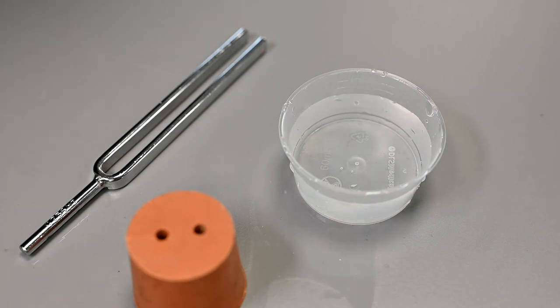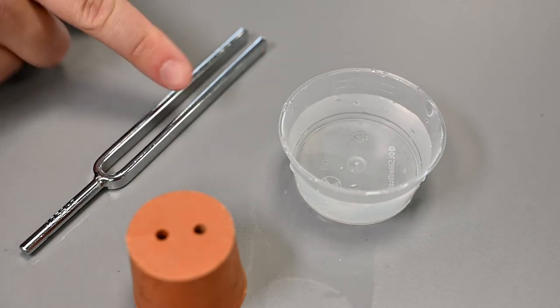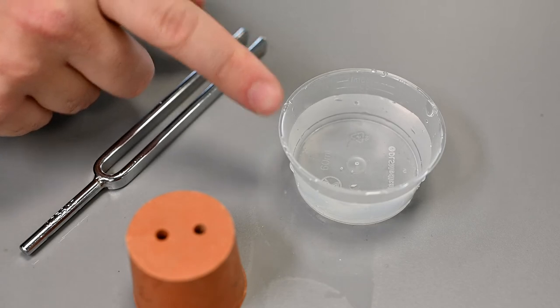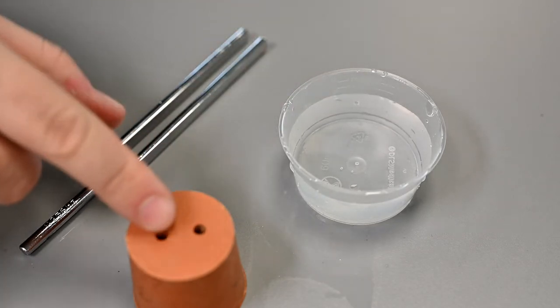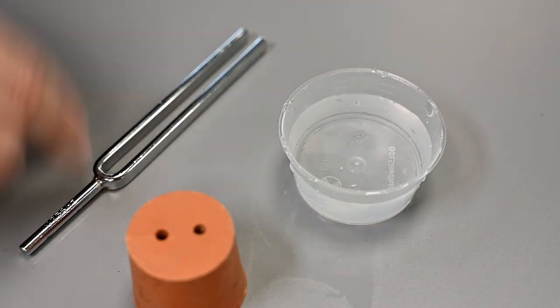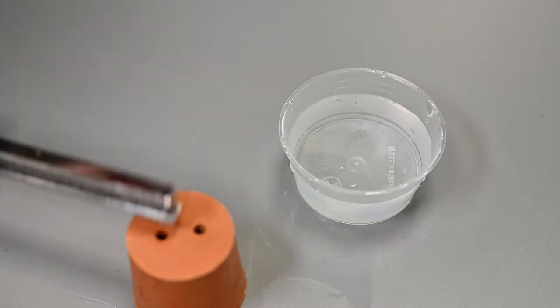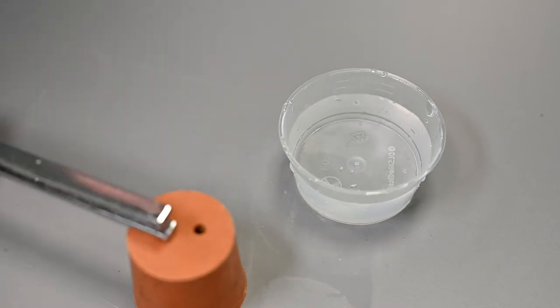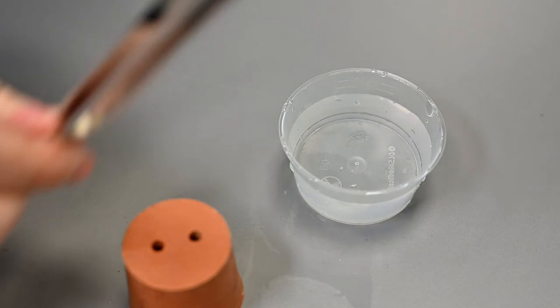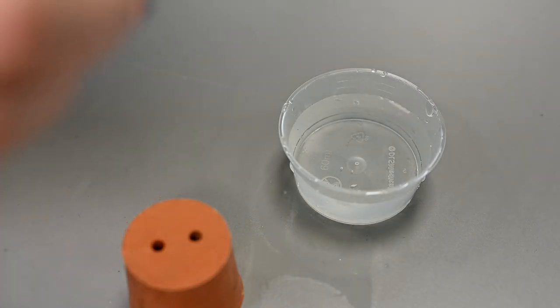Another nice way of showing that sound is a vibration is to use a tuning fork, a small container of water, and this is just to make the tuning fork ring. If you pick up the tuning fork and you hit it on a rubber surface like this bung, you can hear it make a note.